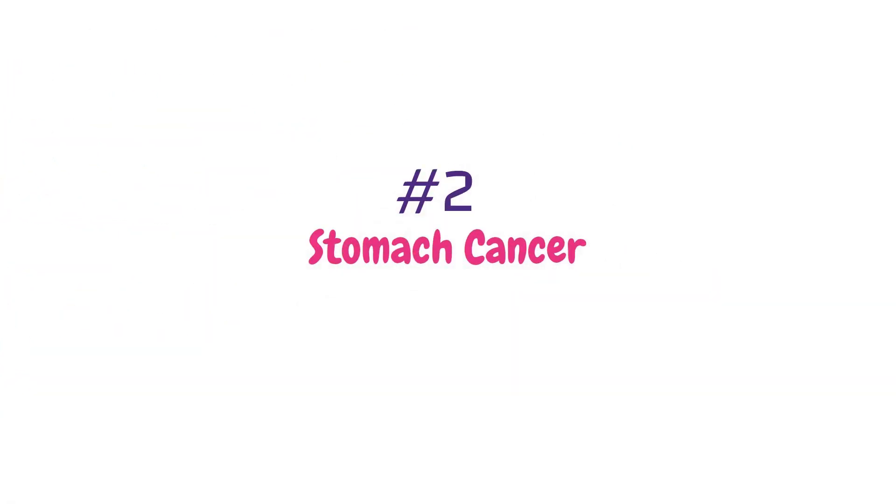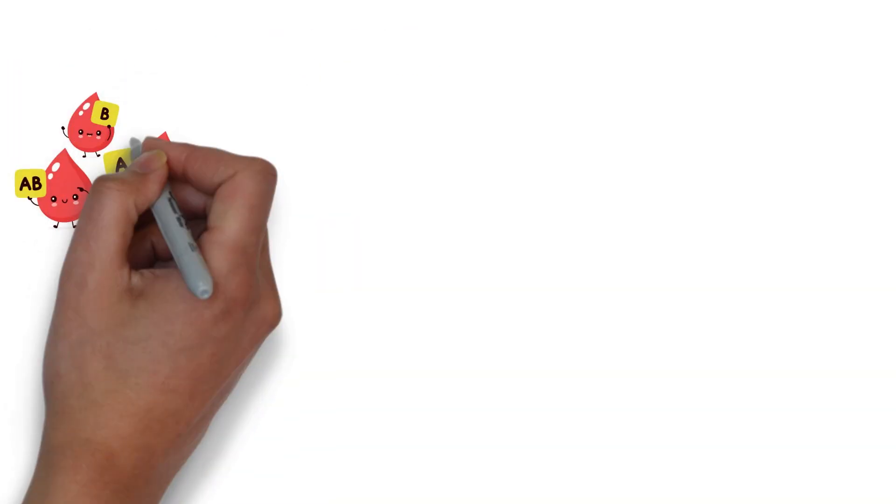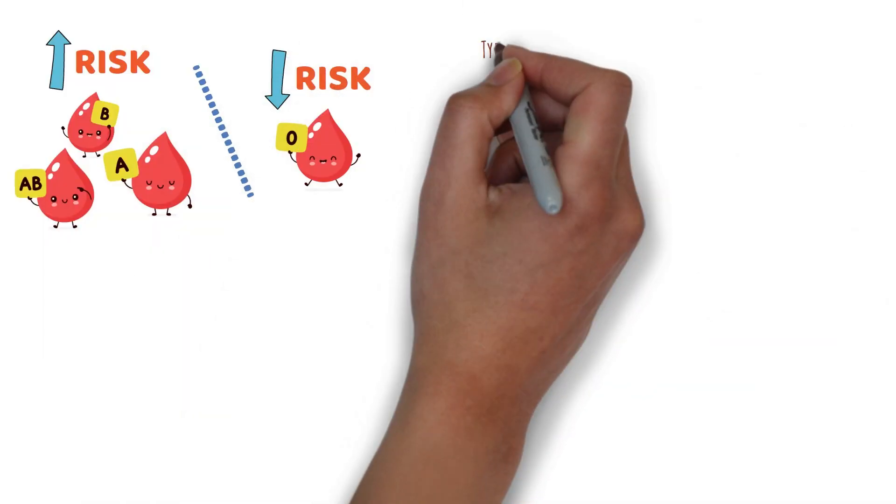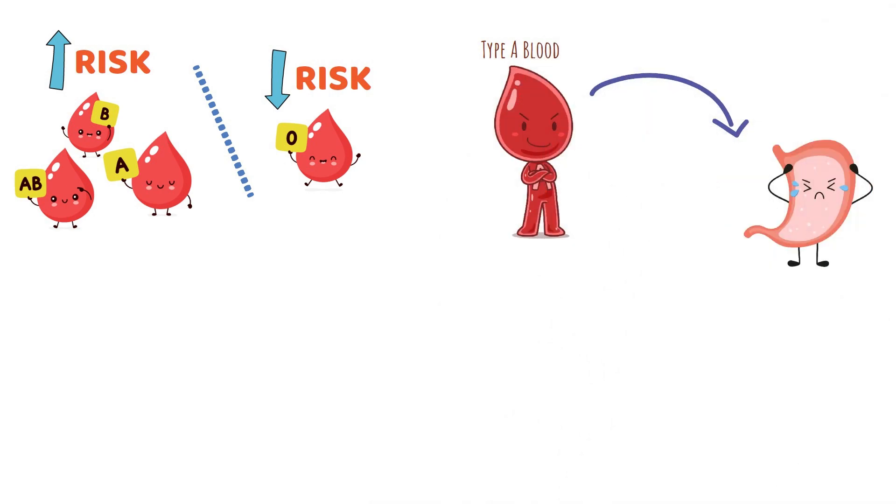Number two, stomach cancer. A, AB and B blood types are more at risk than type O's. Specifically, people with type A blood are more likely to get stomach cancer.